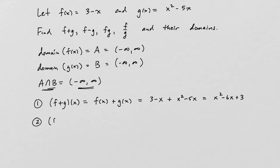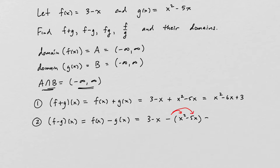f minus g is the same idea — f minus g is defined to be f of x minus g of x. So f of x is 3 minus x, and we subtract g of x. When you subtract the function g of x, you need to use parentheses because the negative must be distributed to both terms. This gives us 3 minus x minus x squared plus 5x, which simplifies to negative x squared plus 4x plus 3. Its domain is the set of all real numbers.